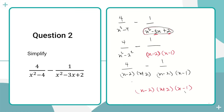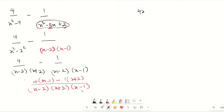The first fraction (x minus 2)(x plus 2) is already covered by the LCM, so we multiply the numerator 4 by (x minus 1). For the second fraction, (x minus 2)(x minus 1) is covered, so we multiply the numerator 1 by (x plus 2). Expanding the numerator gives us 4x minus 4 minus (x plus 2), all over (x minus 2)(x plus 2)(x minus 1).